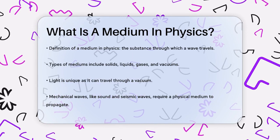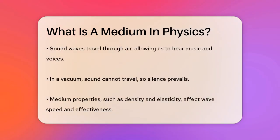When we talk about mechanical waves, like sound waves or seismic waves, they need a physical medium to propagate. For example, sound waves travel through the air in a room, allowing you to hear the music or voices around you. If you were in a vacuum, you wouldn't hear anything because sound waves can't travel through empty space.